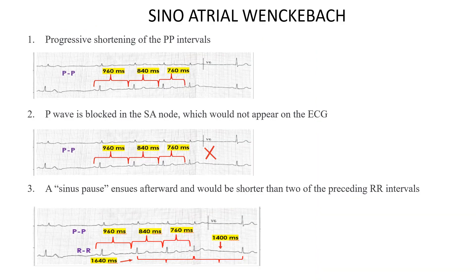Now let's discuss the ECG features of sinoatrial Wenckebach. It must fulfill three criteria. First, there will be a progressive shortening of the PP interval — this is happening here, with PP intervals decreasing from 960ms to 840ms to 760ms. This criterion is met. Second, the P wave is blocked in the sinus node and will not appear on the ECG; the gap here indicates no P wave, and then the P wave reappears. This criterion is also met.